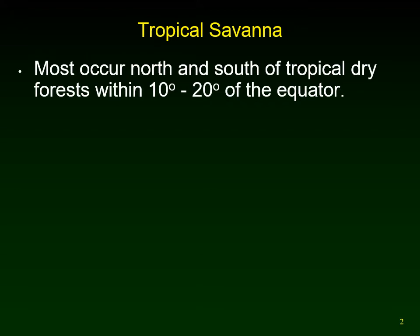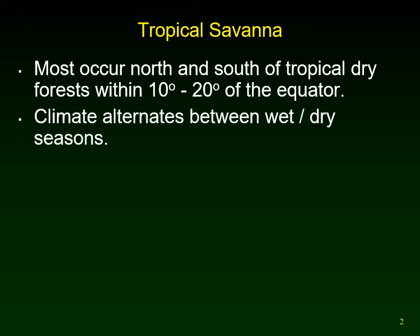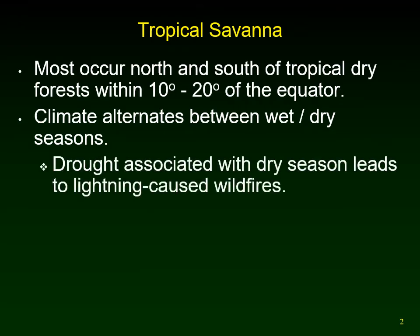The tropical dry forest was between 15 to 25 degrees of the equator. The climate, just like the tropical dry forest, alternates between a wet and a dry season. During the dry seasons, at the beginning of the rainy season there are often thunderstorms, and the lightning causes wildfires.